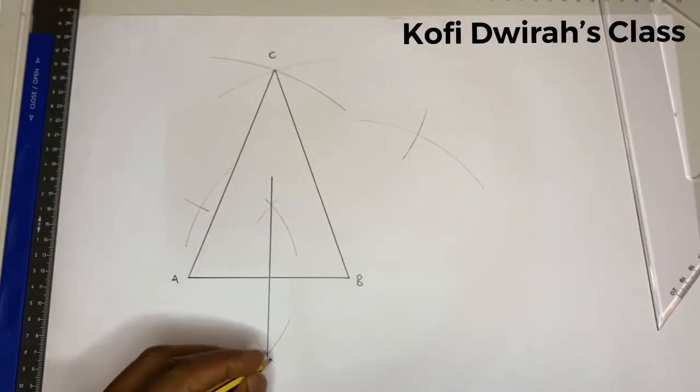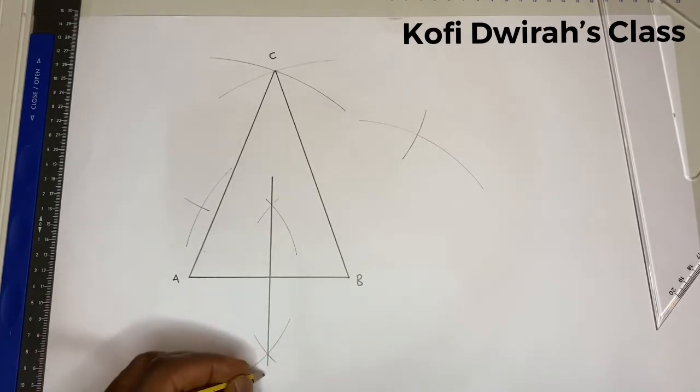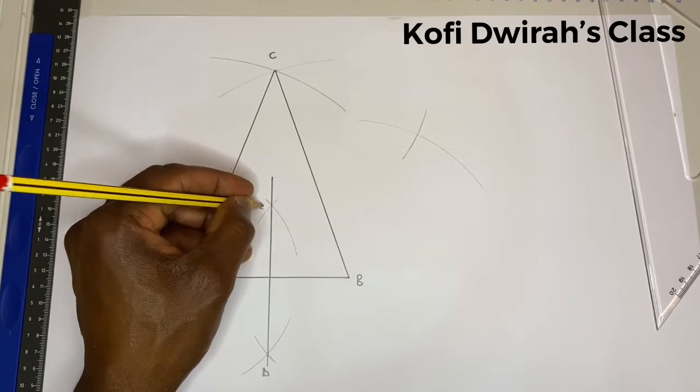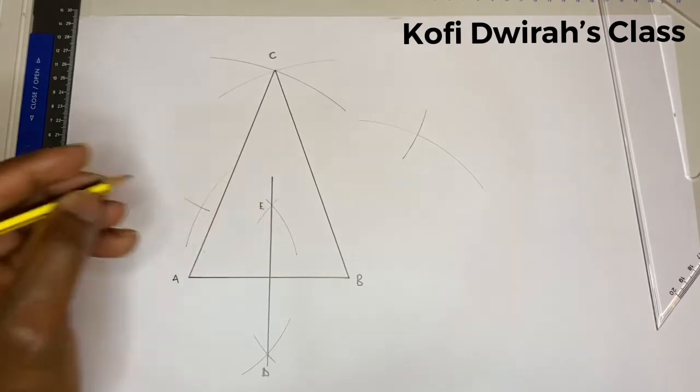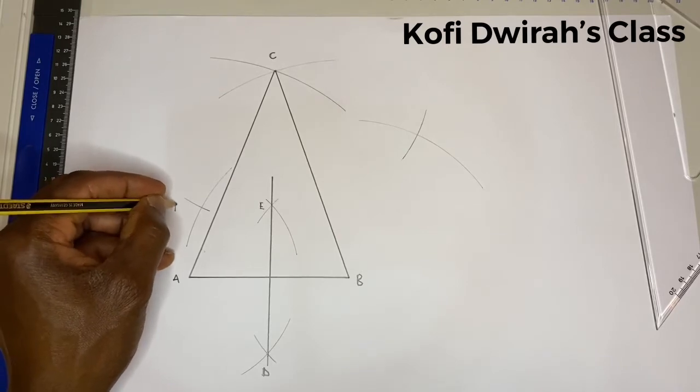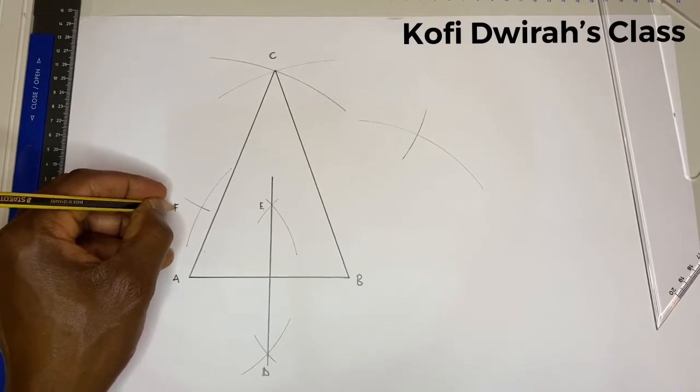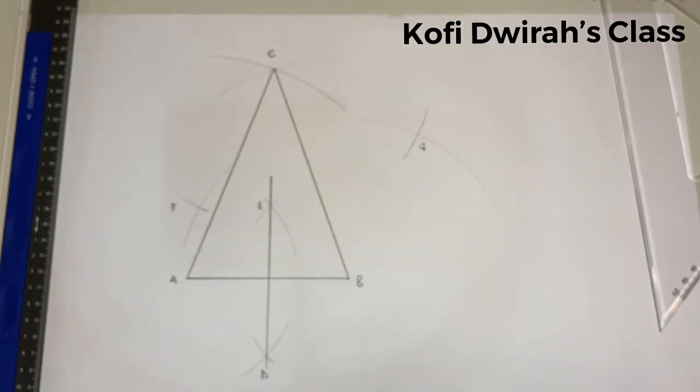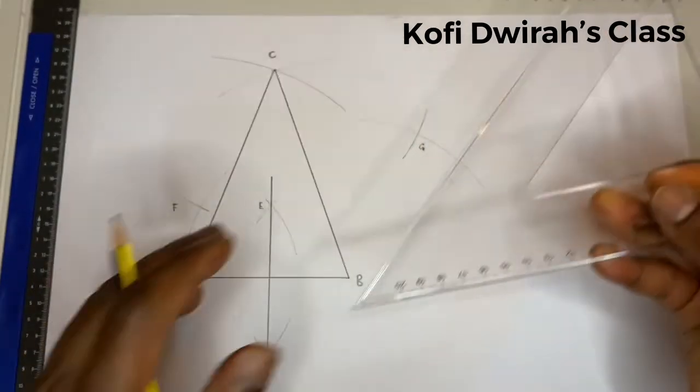So we consider this part to be G, and here to be E. Then we have F, then we have G. Then you draw a straight line.